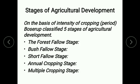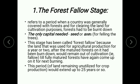The first stage, the forest fallow stage, refers to the period when the country was generally covered with forest and forests had to be burned down for clearing land for cultivation purposes. The only capital needed was a seed or an axe for felling trees. This stage is called forest fallow because the land used for agricultural production for a year or two — after the mature forest on it had been burned down — would remain out of cultivation until a fully matured forest had again grown on it for the next burning. This period of land remaining unutilized for crop production would extend up to 25 years or so.